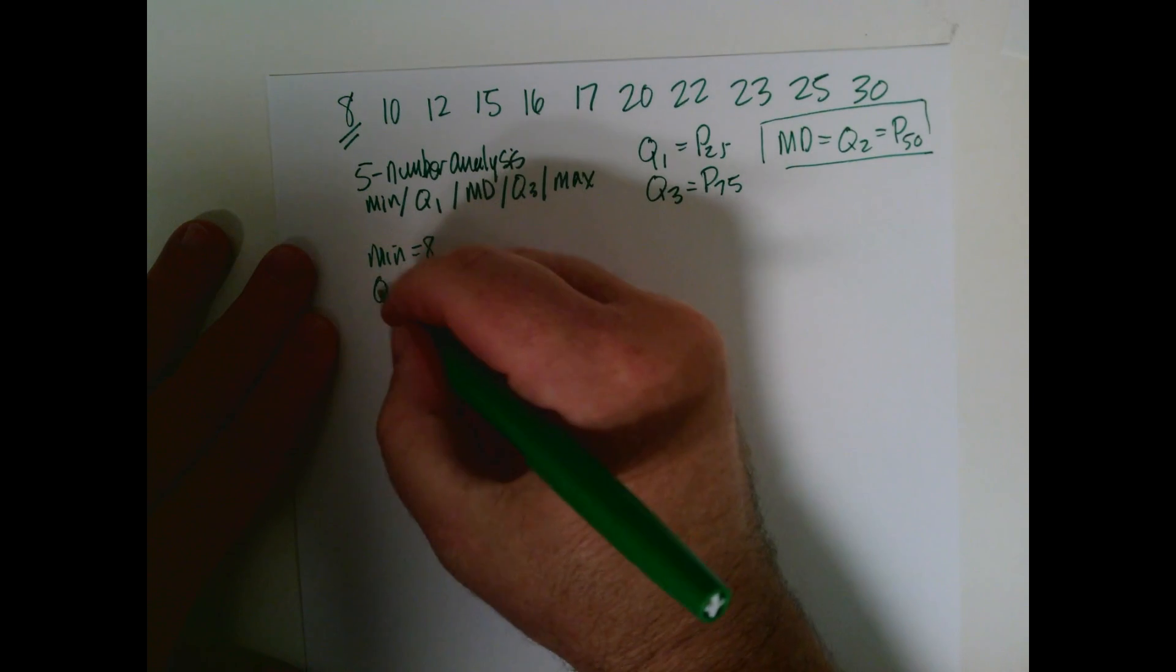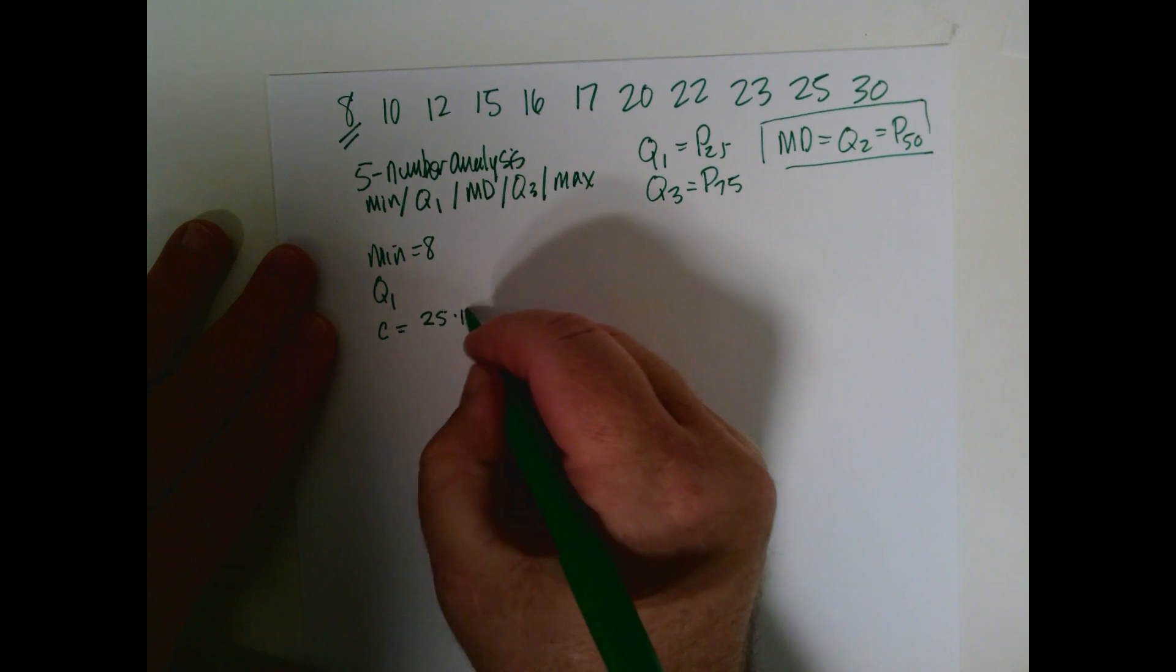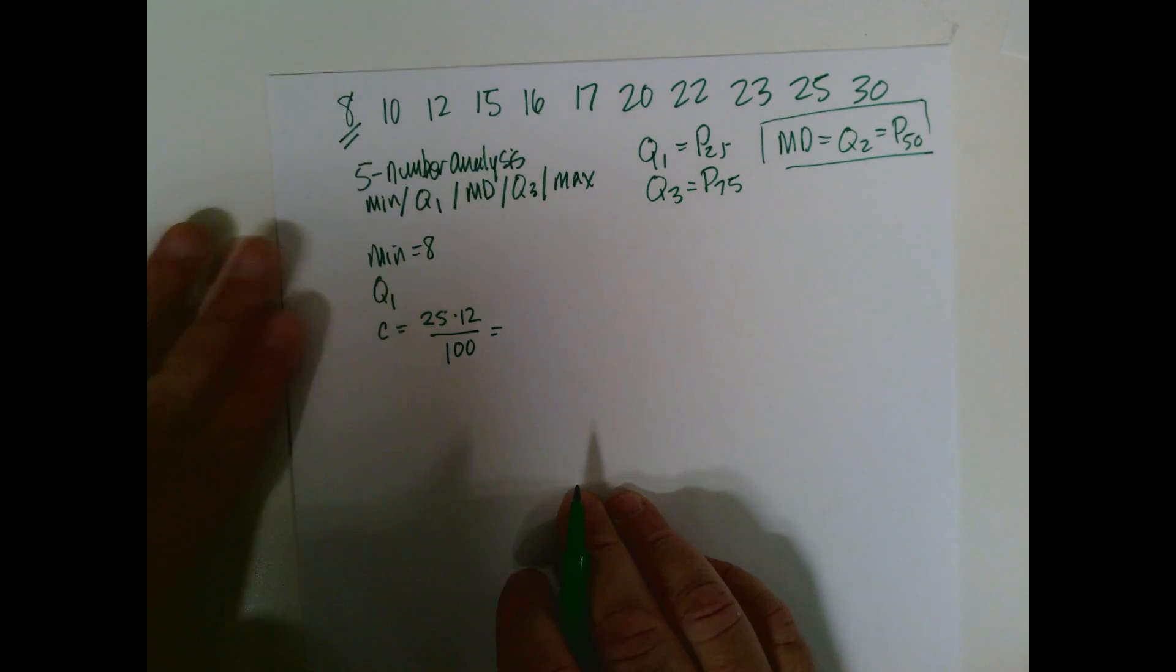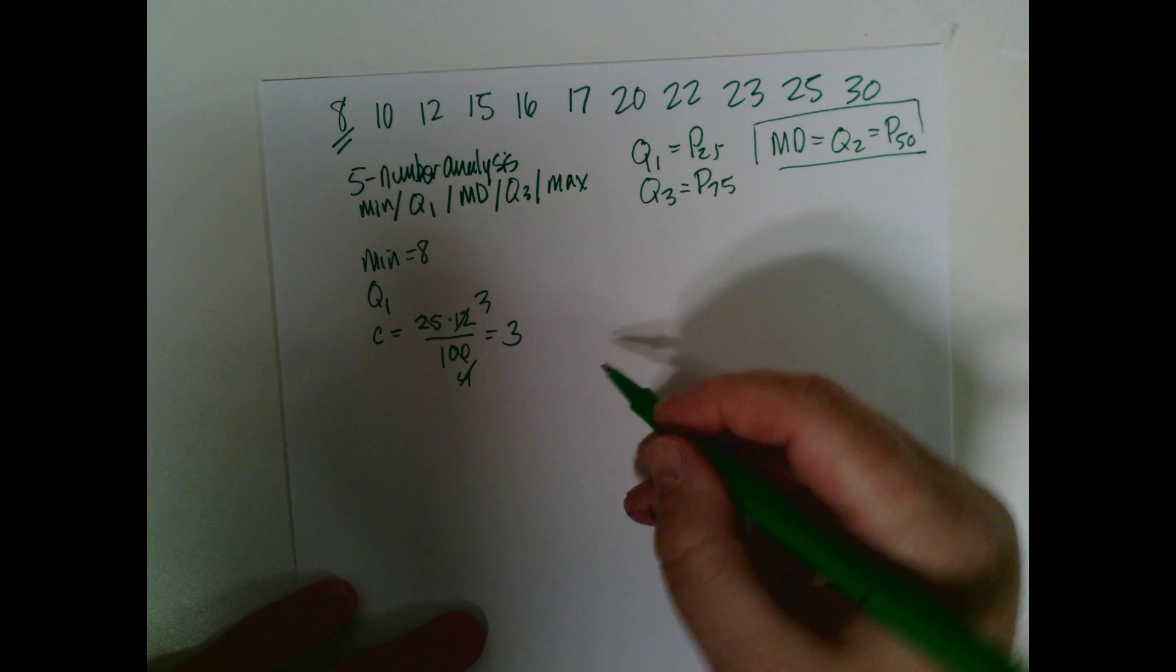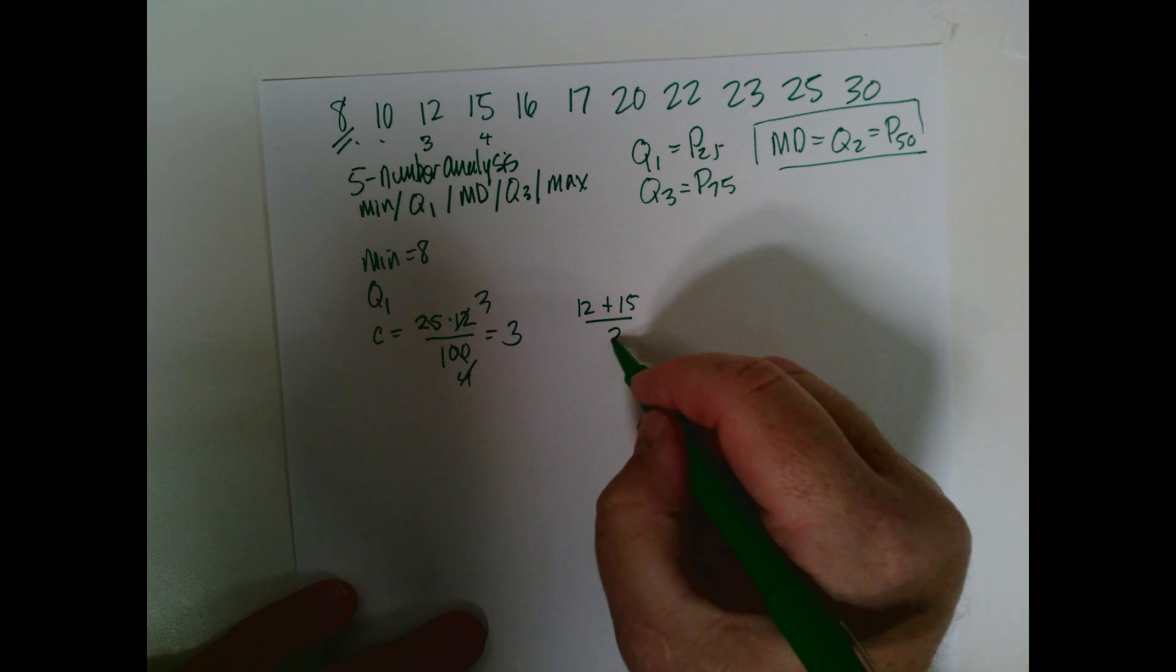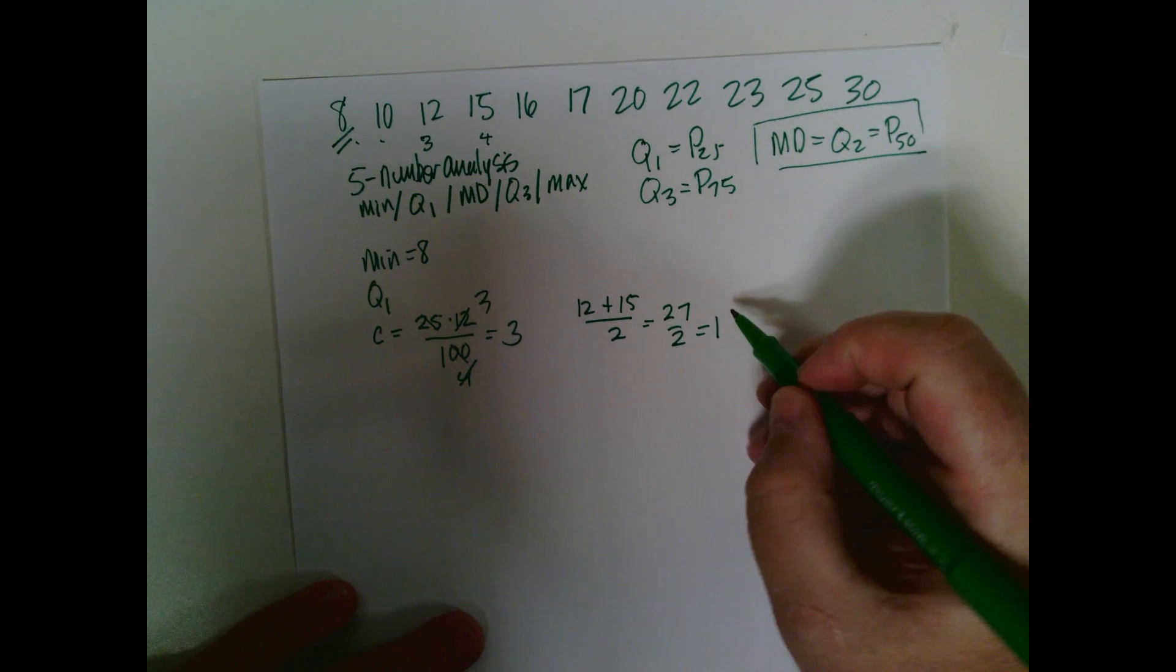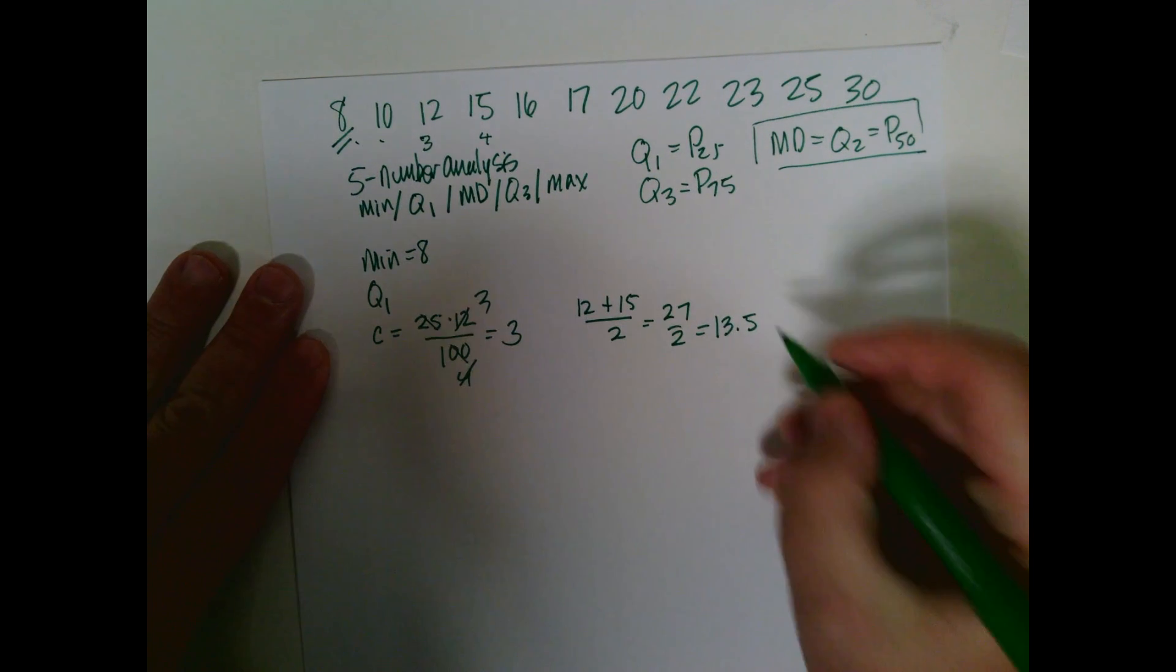All right, the first quartile. Now, if you remember from finding percentiles, we count 25 times 12 divided by 100, this would give us one-fourth of 25 goes into 104 times, 4 goes into 12 three times, so this is 3. Since that's an integer, we're going to count to the third one, one-two-three, and the fourth one. So we have 12 plus 15 divided by 2, that's 27 divided by 2, which is 13.5. So that's our Q1.